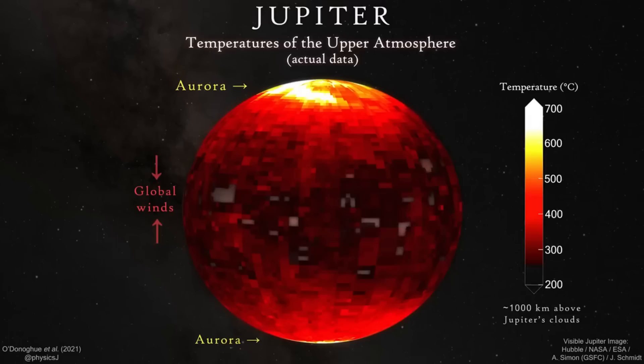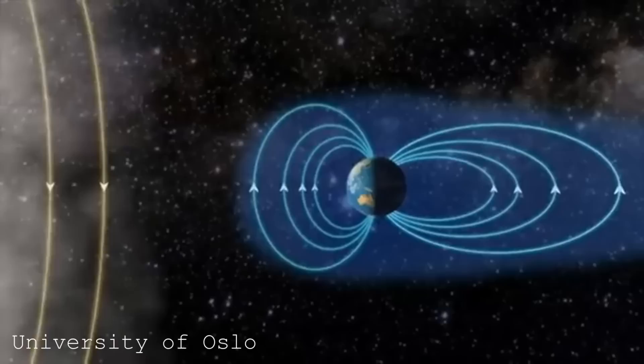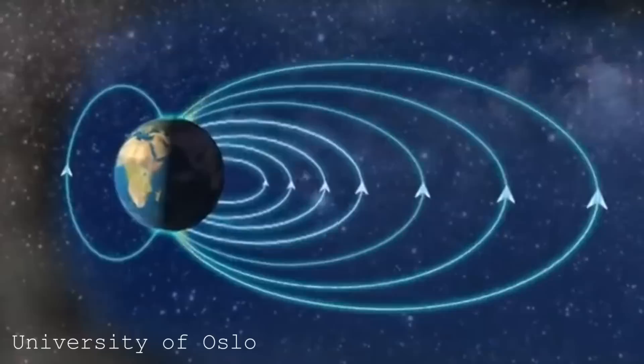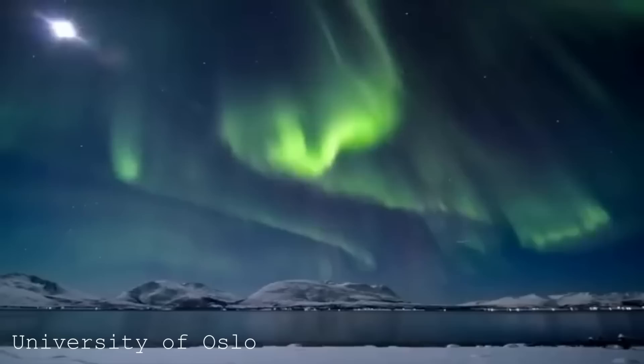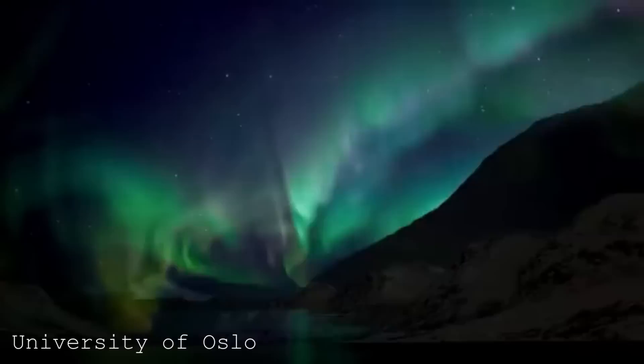So how do these auroras form? While on Earth, it is being caused by charged particles that are being released by solar storms. And when they arrive at Earth, those charged particles will be then funneled in by Earth's magnetic field so that they will arrive at the North and South Pole. When these charged particles hit molecules in the atmosphere, energy is being released in the form of light, which we will see in the form of auroras.